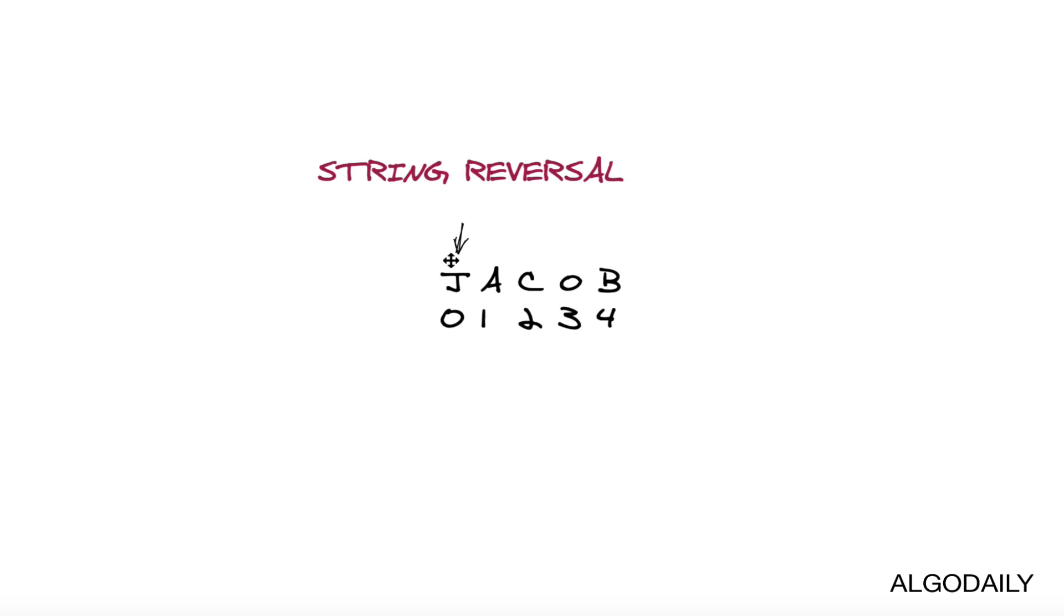Here, you can see that we have J, A, C, O, B as the string. If we were to assign two-pointers instead, we could have one pointer start at the front here, and one pointer start at the back here.